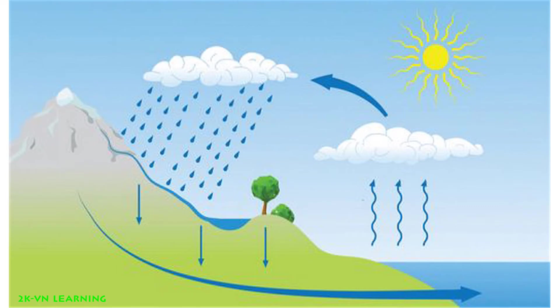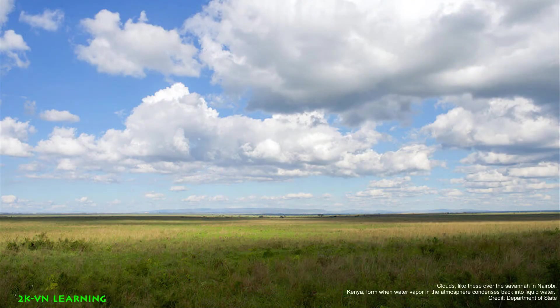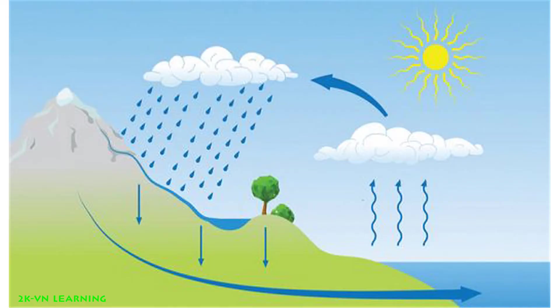When the water vapor freezes together it forms a cloud. Those clouds become so heavy they rain down — this is precipitation. Precipitation is when water comes down to the sea, and evaporation is when water from the sea goes up.